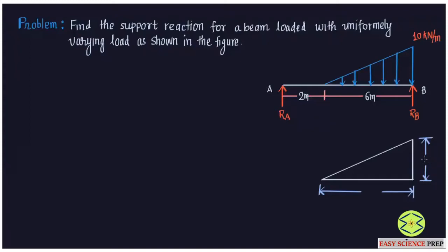If the height of loading, that is the maximum intensity, is W, and the length on which it is acting is L, then the imaginary point load is given by the area of the triangle, which is half times the intensity times the length: imaginary point load = (1/2) × W × L. The location of this imaginary point load is at a distance of L/3 from the point of maximum load intensity, or 2L/3 from the other end.